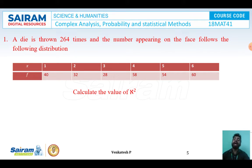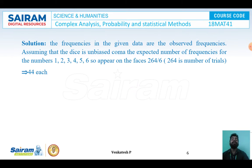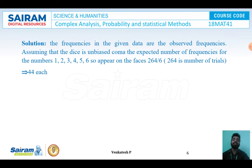To calculate the expected frequency, we divide the 264 total trials equally among the six outcomes x = 1, 2, 3, 4, 5, 6. So the expected frequency is 264 divided by 6, which equals 44 for each value of x.